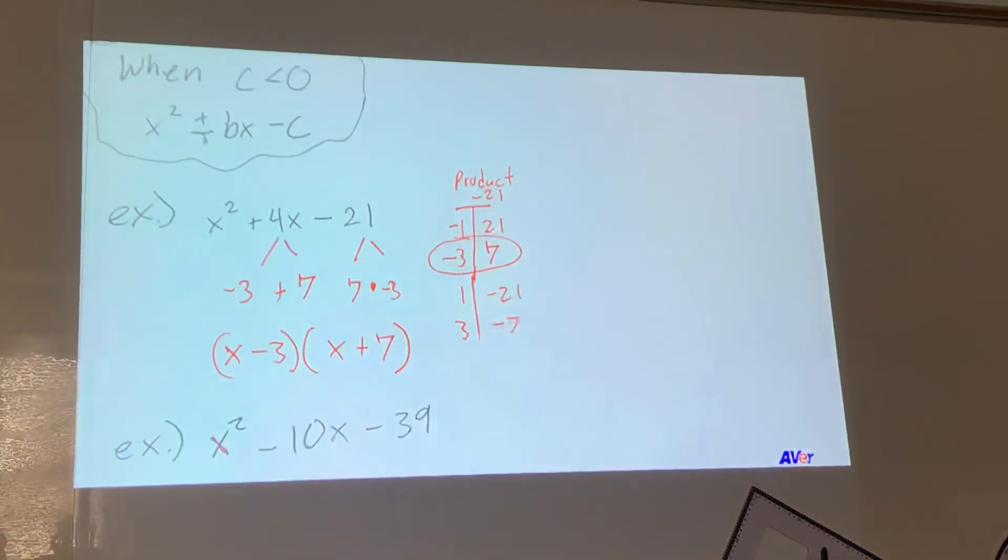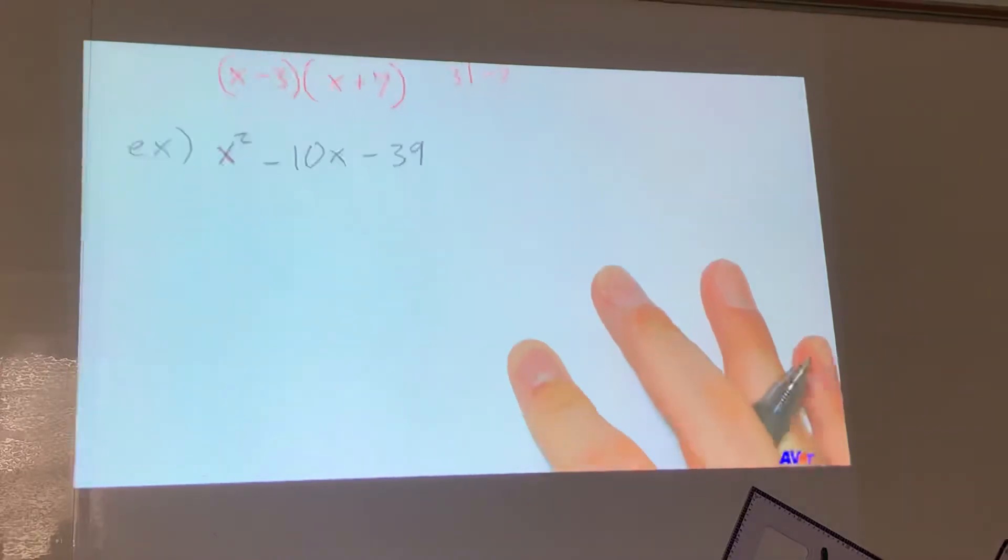Alright, some of you are getting real good at this, and you can kind of just see the numbers. Your brain works in that way. Does anyone just automatically see these numbers? A couple of us. How many of you just can't see the numbers unless you do the factor table? That's okay. Factor tables are just fine.